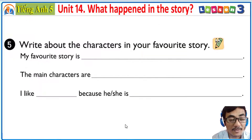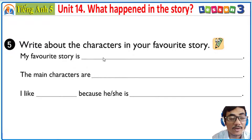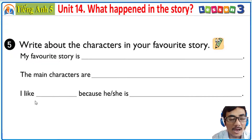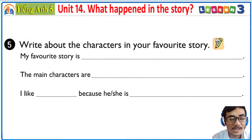Activity four is finished. We move on to Activity number 5: Write about the characters in your favorite story. You have a look here. My favorite story is... The main characters are... I like [him/her] because he or she is... Here is my example: My favorite story is the fox and the crow. The main characters are a fox and a crow. I like the fox because he is very clever. That's my example. Now it's your turn to write. Activity five is finished.